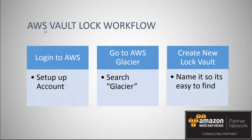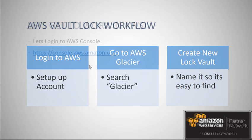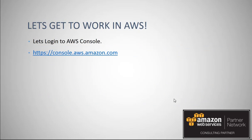With AWS VaultLock there is a basic workflow. The first thing you're going to want to do is log into AWS, then go over to AWS Glacier, and then go ahead and create a new lock vault. Let's go ahead and go to the console.